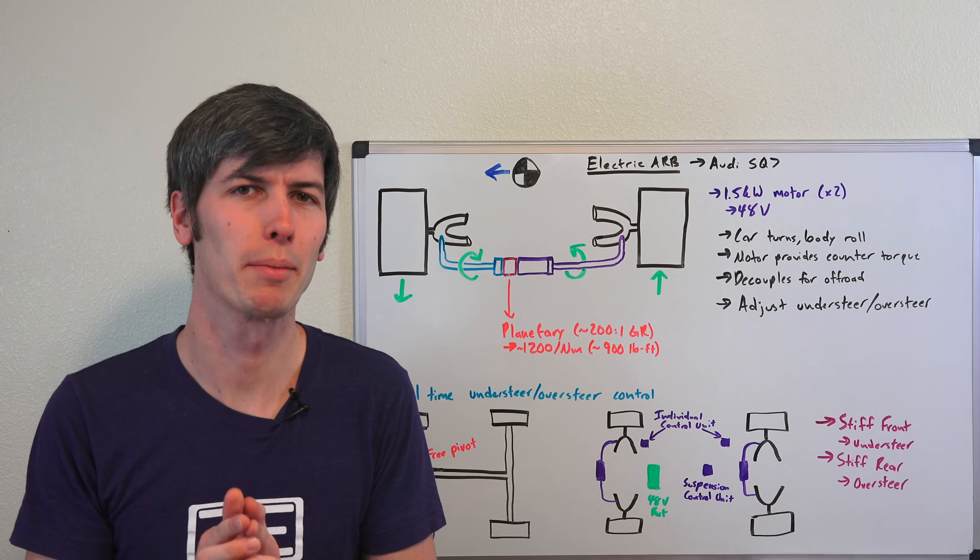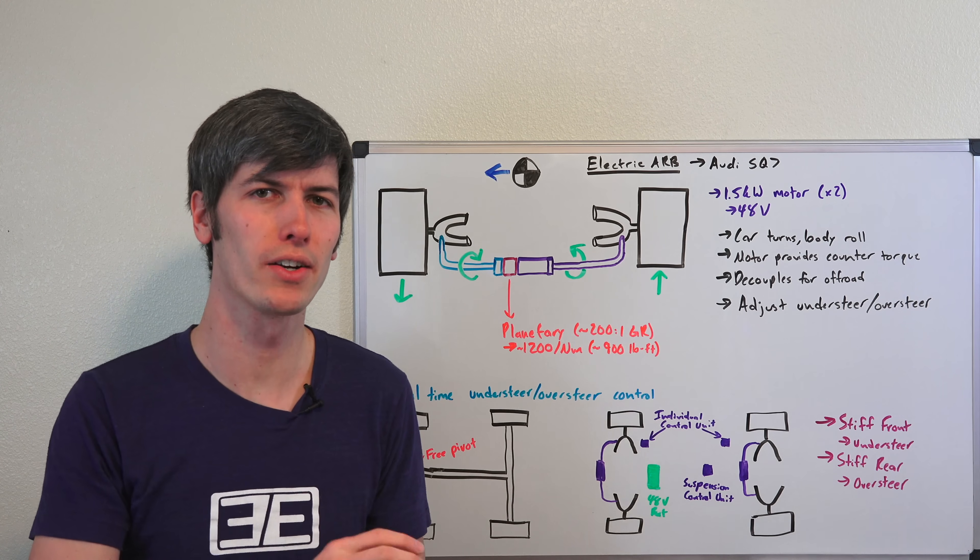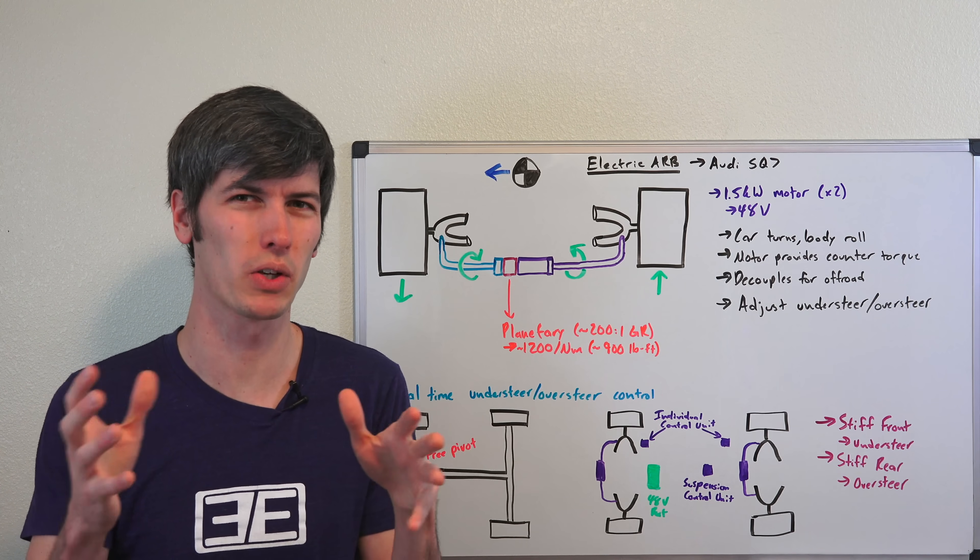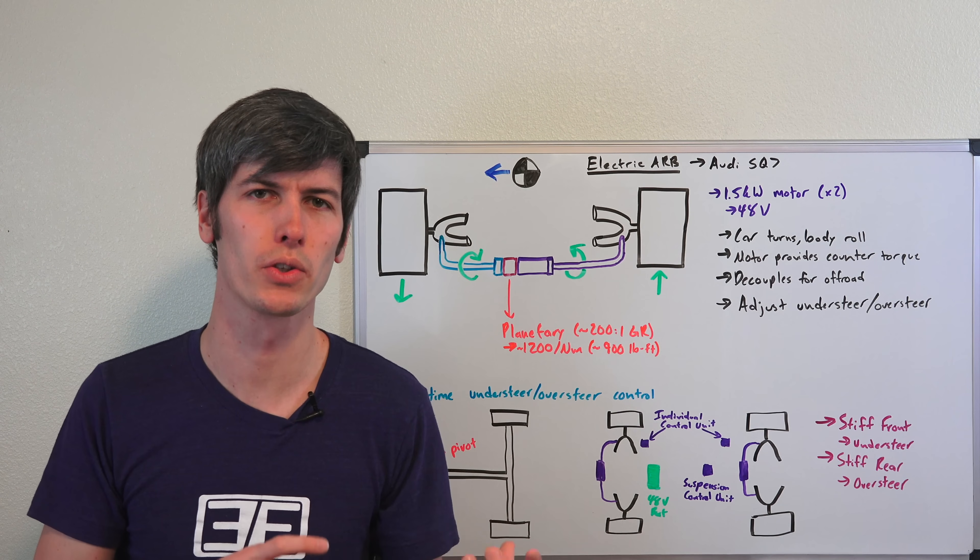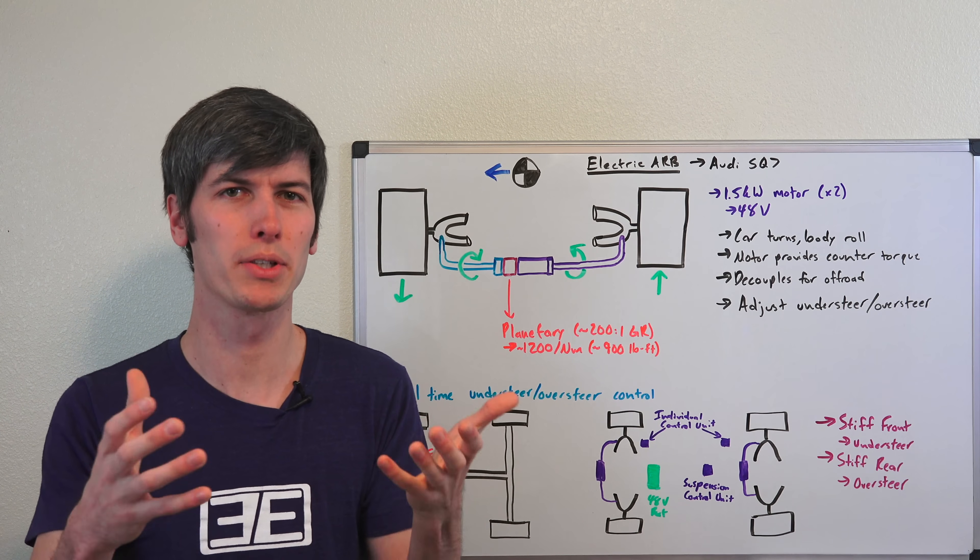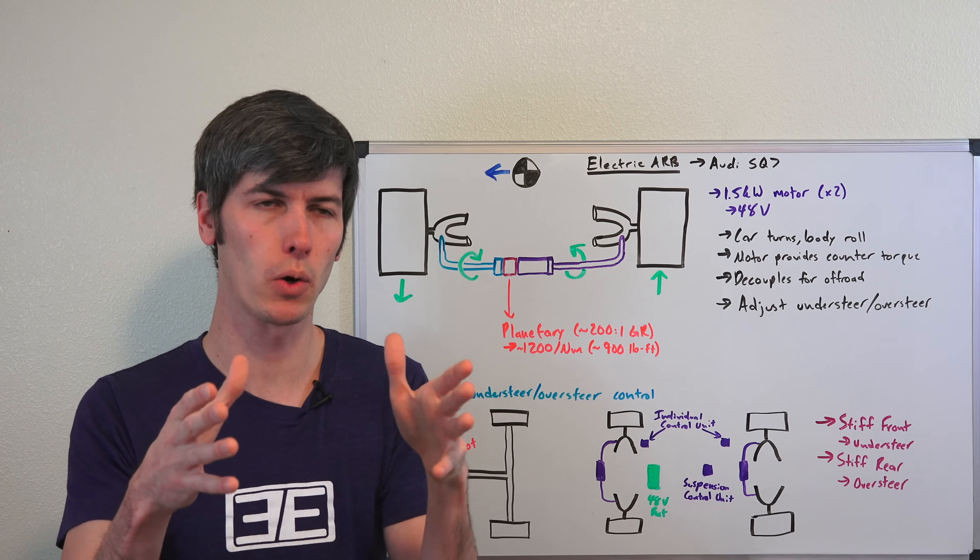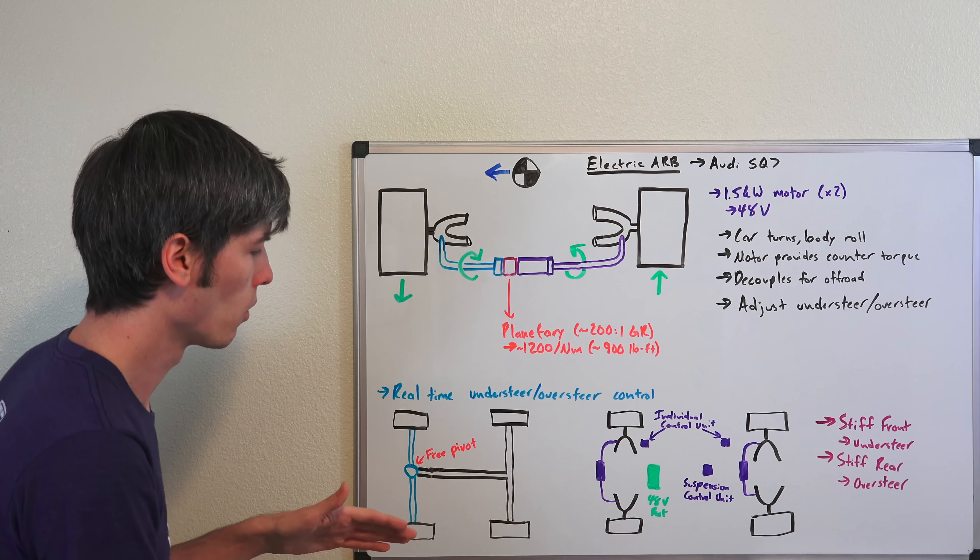Probably the coolest thing about this system is that you can change the understeer and oversteer characteristics of the car in real time. Whether the front or rear starts to lose traction, you can make real-time adjustments to keep the balance of the car very neutral.